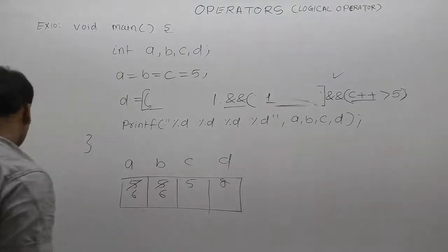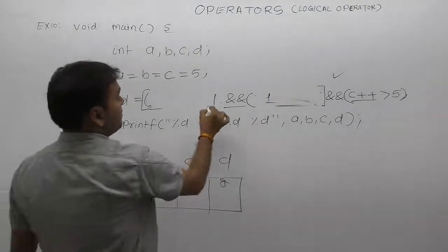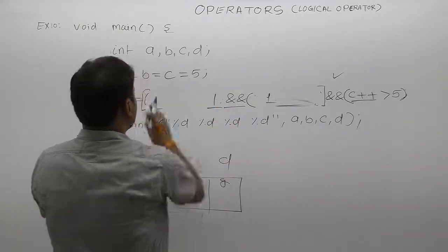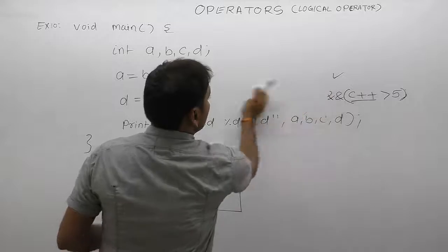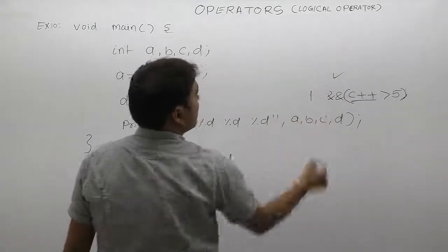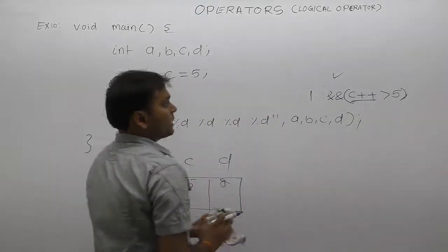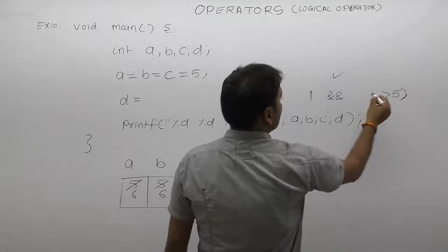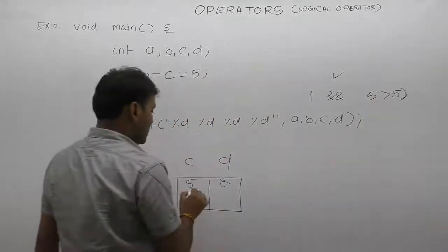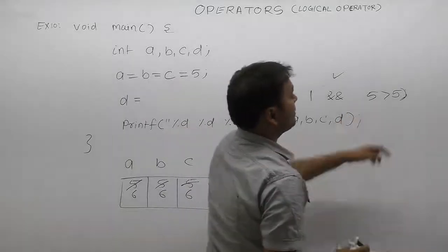In respect to the current AND operator, the first condition is true, second before the AND. Now the third condition: c++, which is 5. Then c gets incremented by 1, c becomes 6. Then 5 greater than 5 - condition is false.